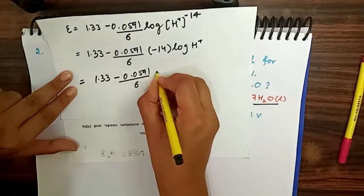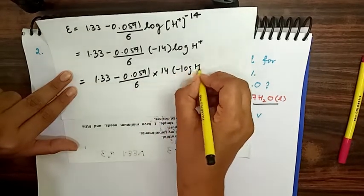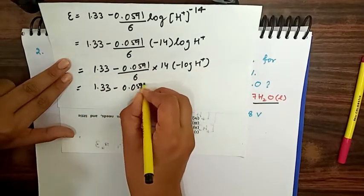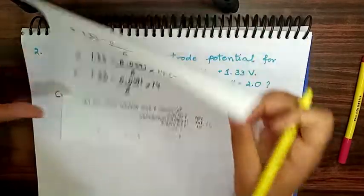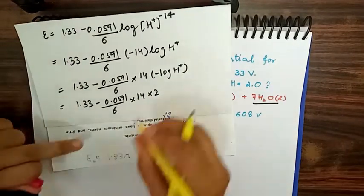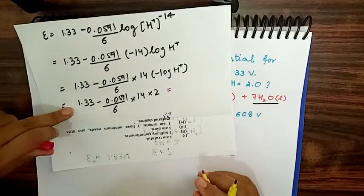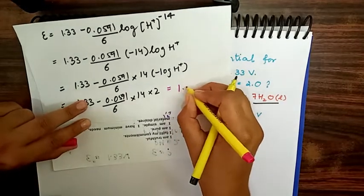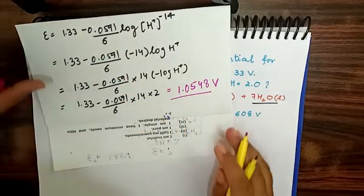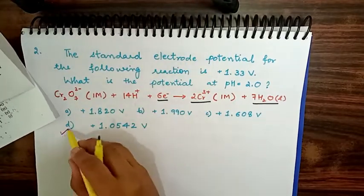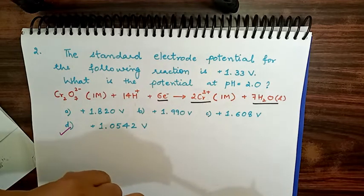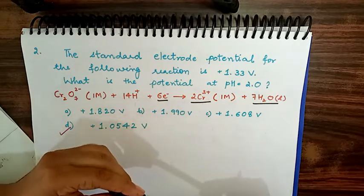Rewriting: E = 1.33 − (0.0591/6) × 14 × (−log[H⁺]), and substituting −log[H⁺] = pH = 2. Calculating, the potential comes out to approximately 1.0548 volts. Checking the options, option D matches this value. These are the types of questions in this topic. In the next video we will cover the next topic. Thank you so much.